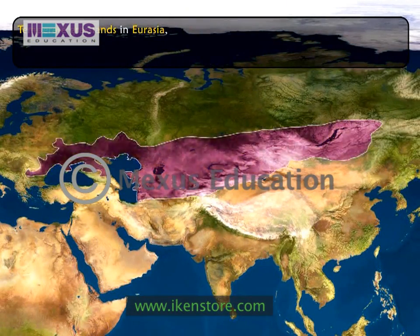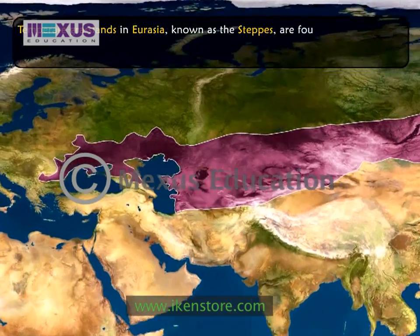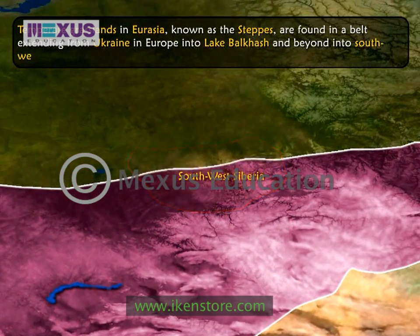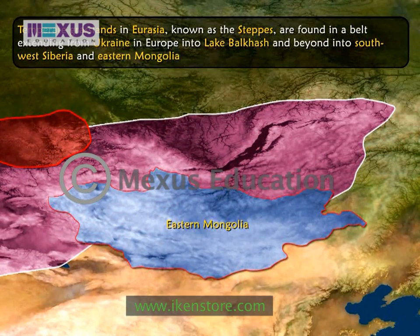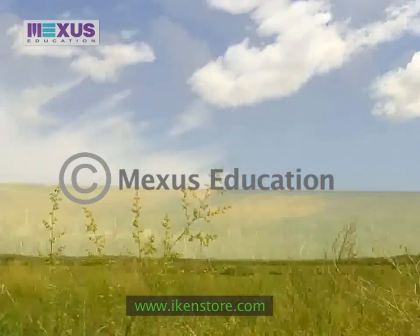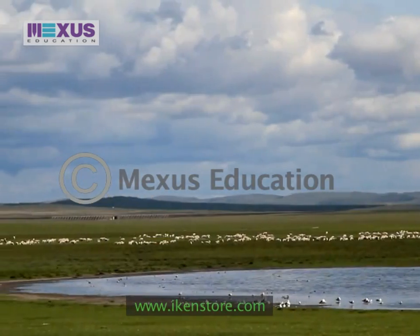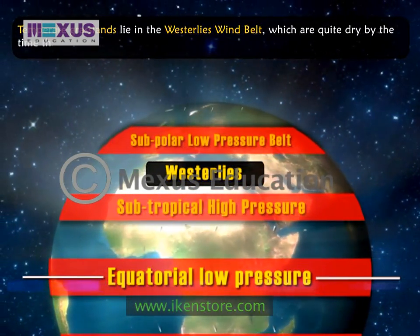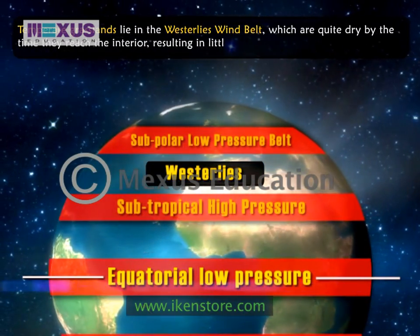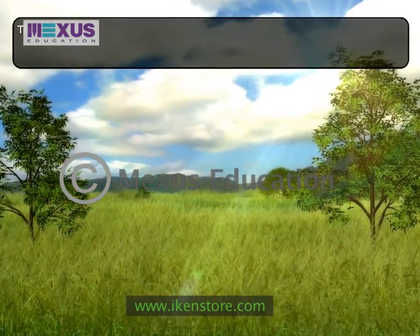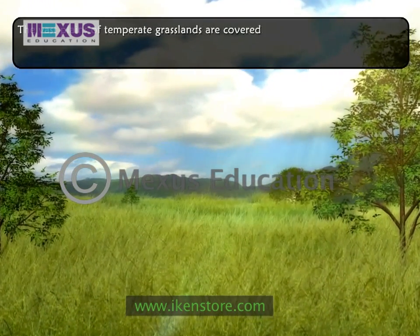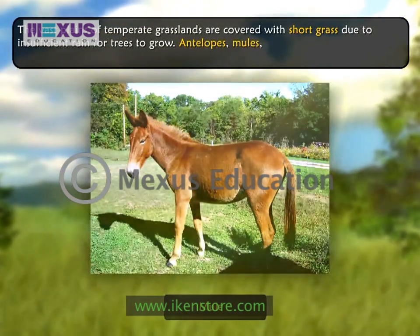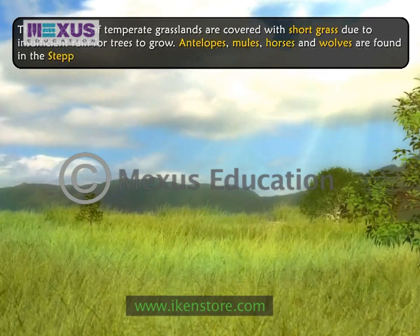Temperate grasslands in Eurasia, known as the steppes, are found in a belt extending from Ukraine in Europe into Lake Balkhash and beyond into southwest Siberia and eastern Mongolia. Winters are very cold and summers are hot with small amounts of rain. These grasslands lie in the westerlies wind belt, which are quite dry by the time they reach the interior, resulting in little rainfall. The vast plains are covered with short grass due to insufficient rain for trees to grow. Antelopes, mules, horses, and wolves are found in the steppes.